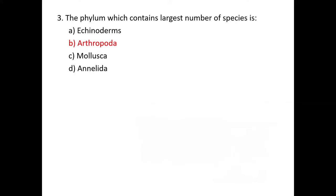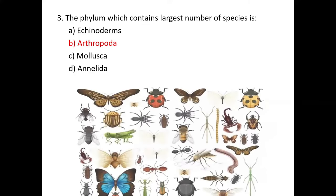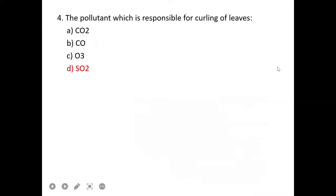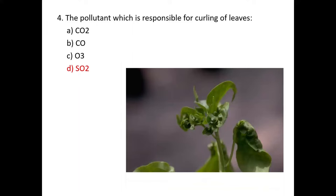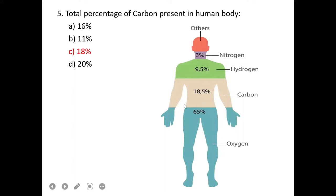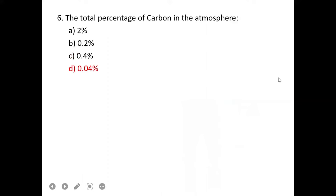Third MCQ: the phylum which contains largest number of species. The largest number of species, about 10 million, are present in Arthropoda. Number four: the pollutant which is responsible for curling of leaves is sulfur dioxide. Total percentage of carbon present in human body: carbon's percentage in human body is around 18%. Oxygen 65%, carbon 18.5%, hydrogen 9.5%, nitrogen 3%, and the remaining elements are 4%.